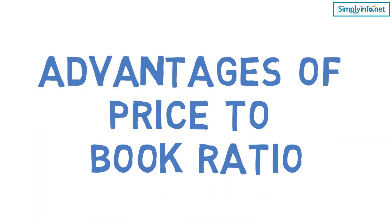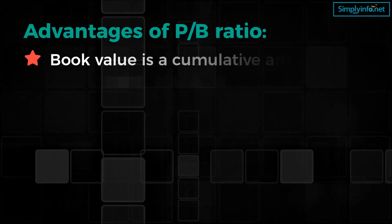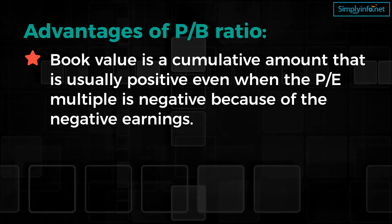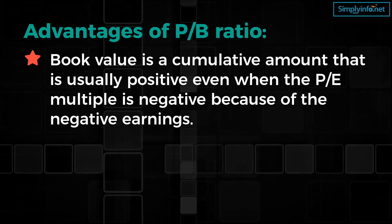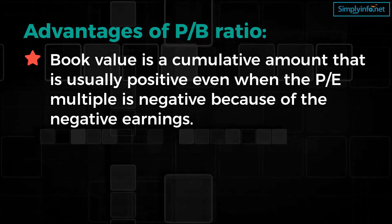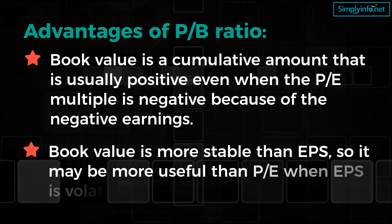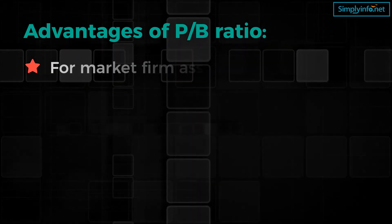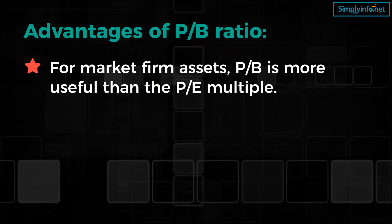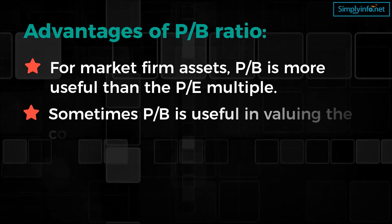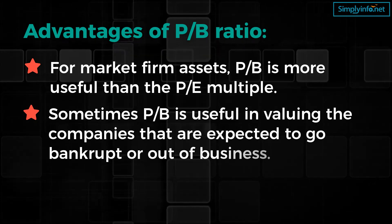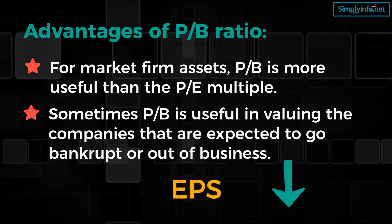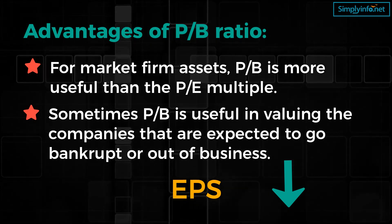What are the advantages of PB ratio? Book value is a cumulative amount that is usually positive even when the PE multiple is negative due to negative earnings, meaning PB can be used when PE cannot. Book value is also more stable than EPS, so it may be more useful than PE when EPS is volatile. For market-based firm assets, PB is more useful than the PE multiple. Additionally, PB is useful in valuing companies that are expected to go bankrupt or out of business. To know more about EPS, please watch our video on EPS — a link is available in the description.